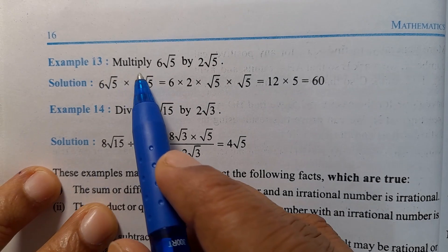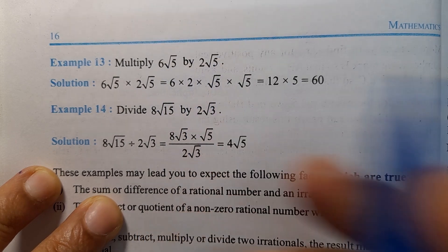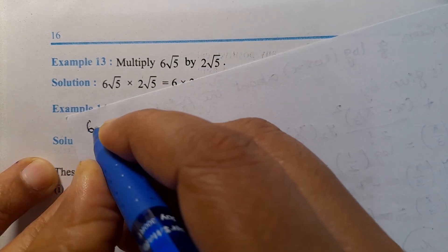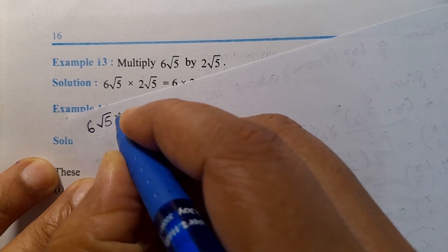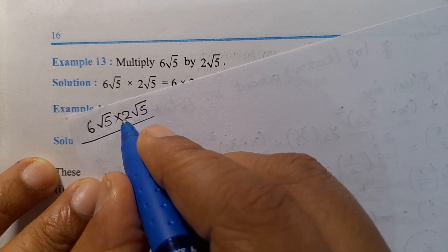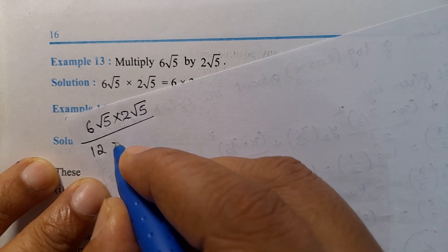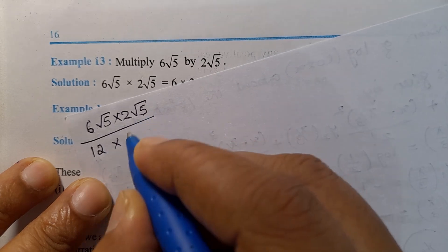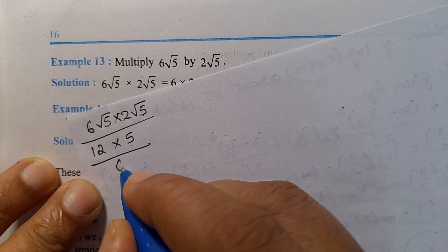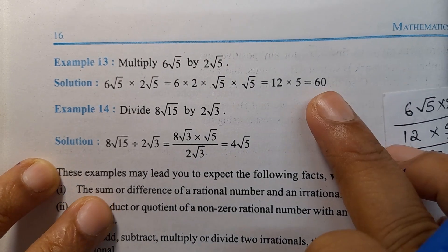Example 13: Multiply 6 root 5 by 2 root 5. So, we use the multiplication method: 6 root 5 into 2 root 5. First, 6 times 2 is 12. Into root 5 times root 5 is 5. So, next, 12 into 5 is 60. 60 is the answer.